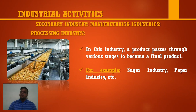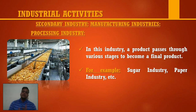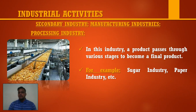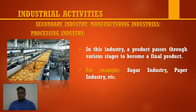Other processing industry examples: sugar cane is crushed in one process, then converted into juice in the next process, and then goes through filtration. Similarly, the paper industry uses trees as raw material — it is made into paper through multiple stages. These kinds of industries are considered processing industries.